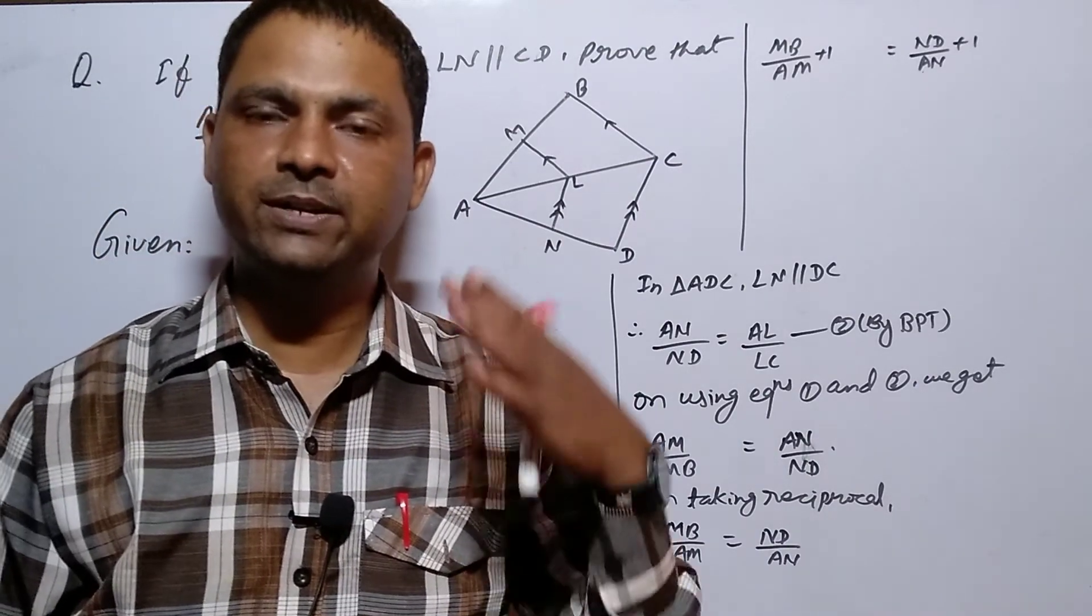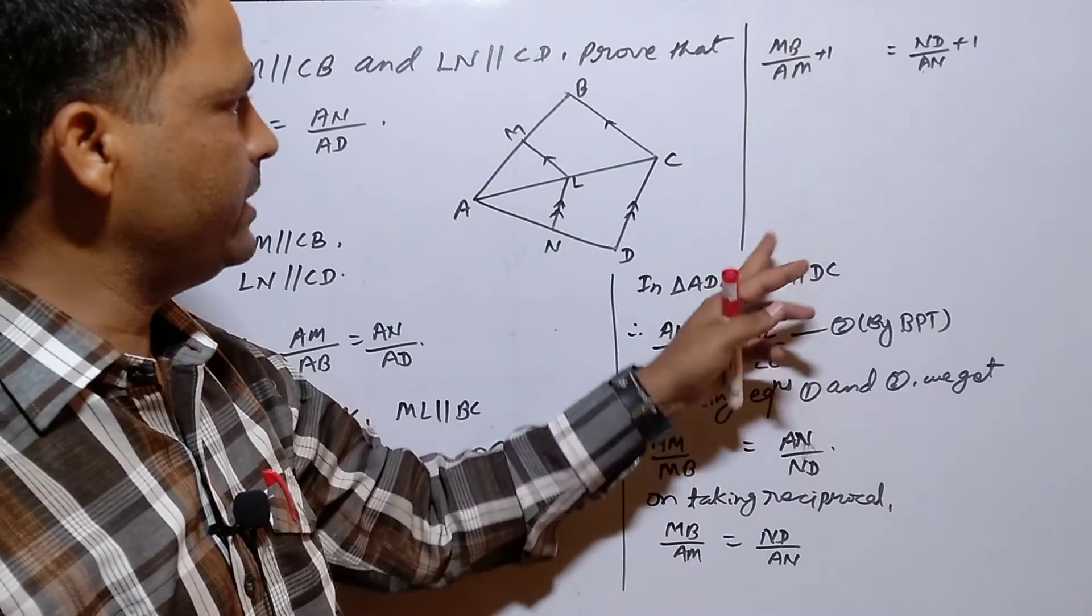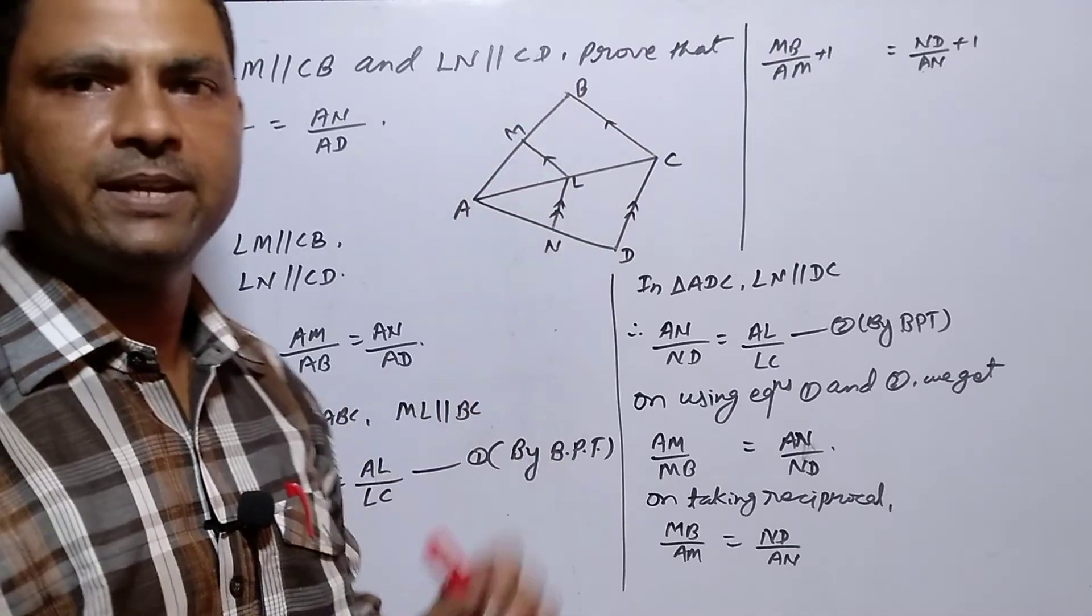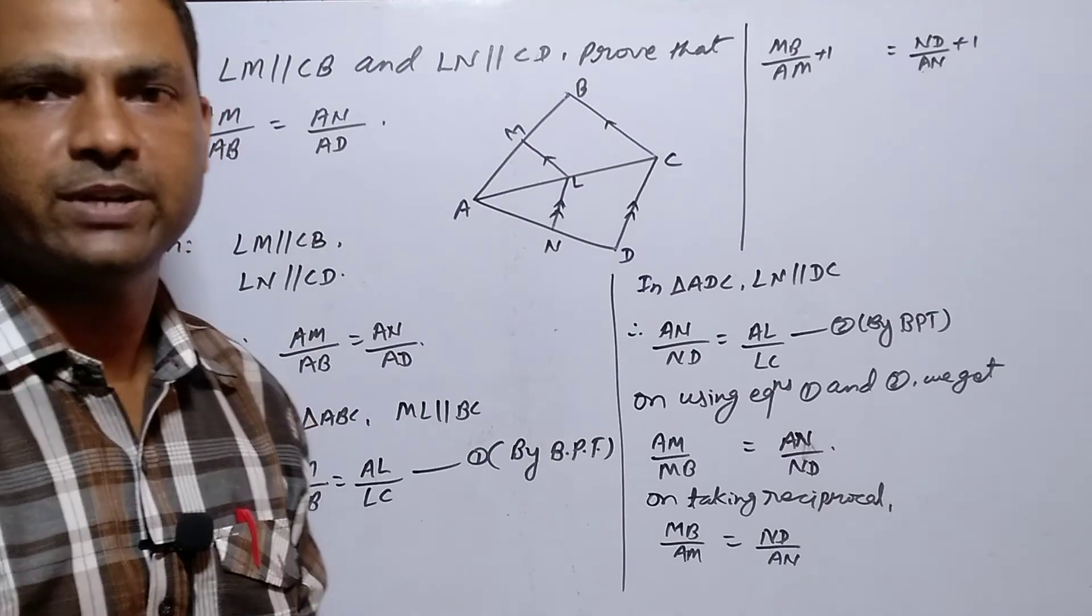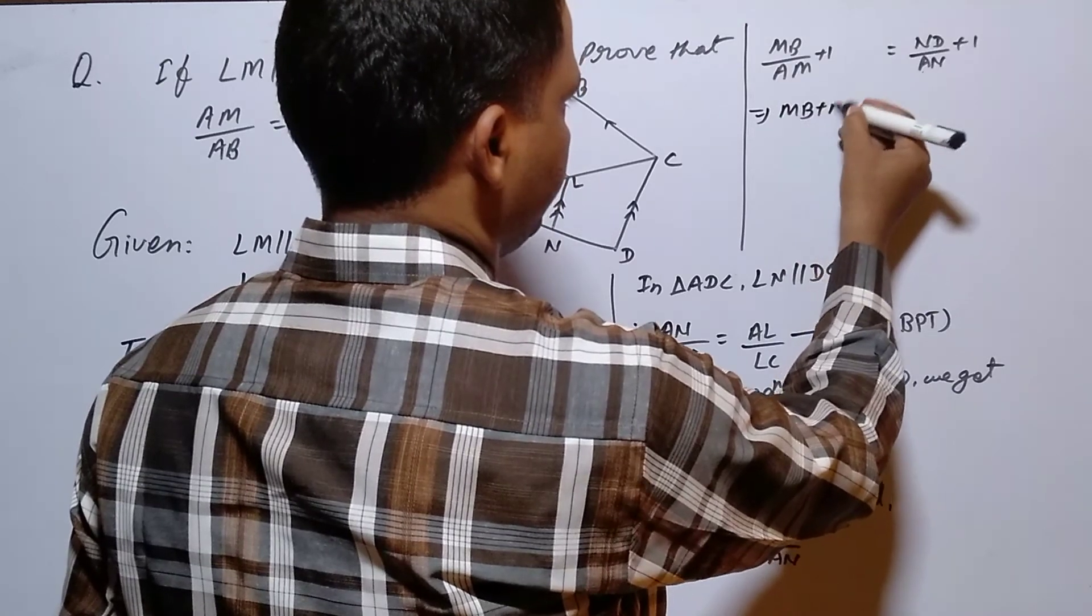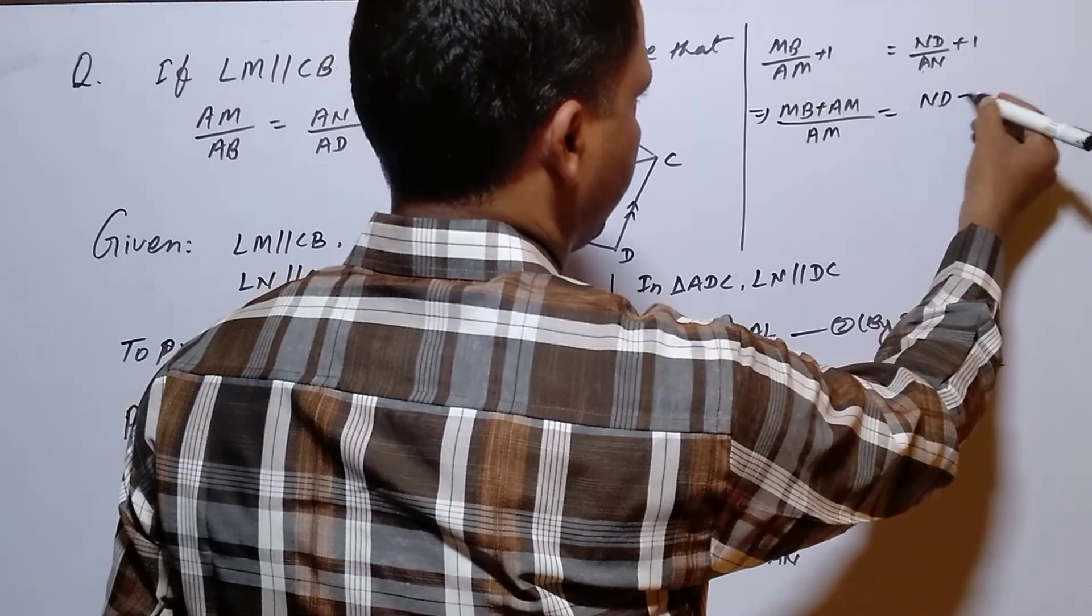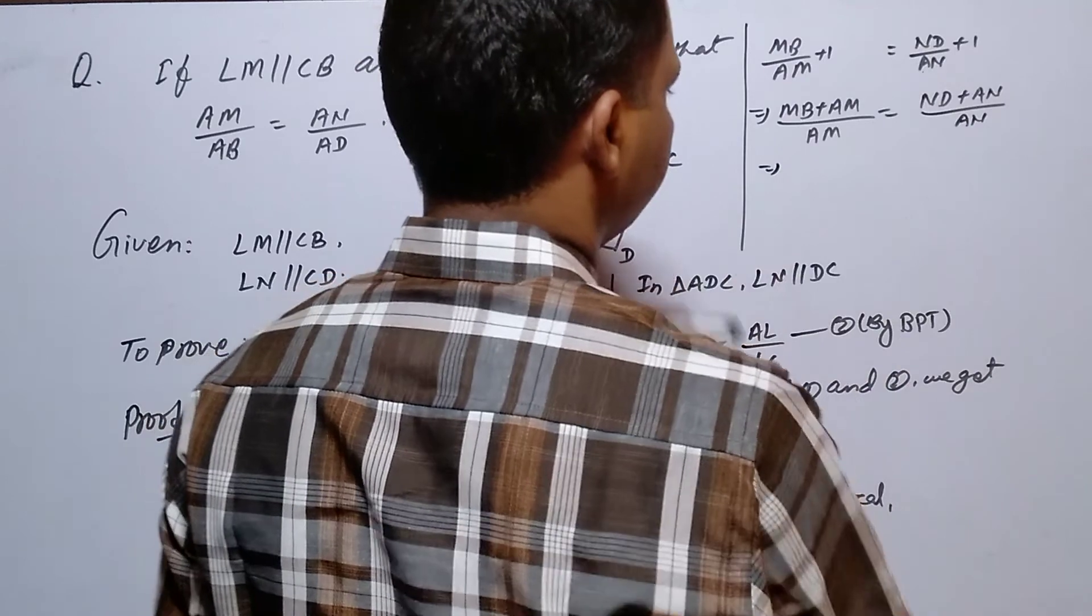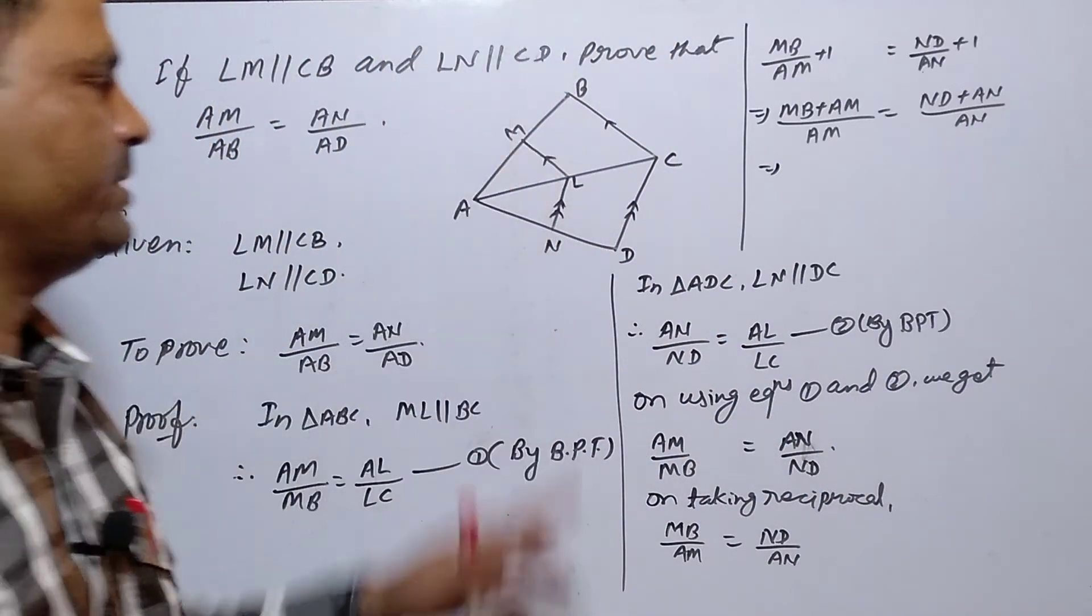Why add 1? Because adding 1 gives us MB plus AM which equals AB, and we need to prove AB. So we get MB plus AM by AM equals ND plus AN by AN. From the figure, AM plus MB equals AB by AM.